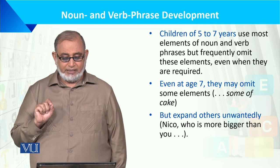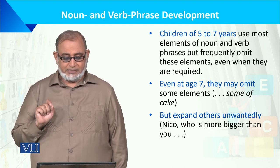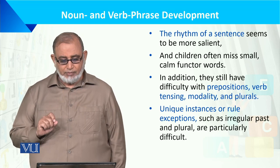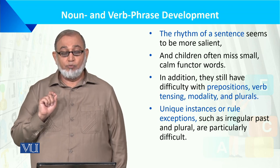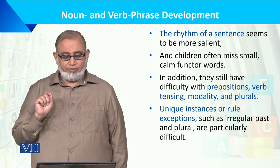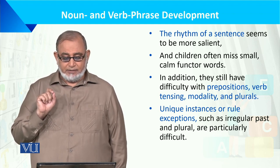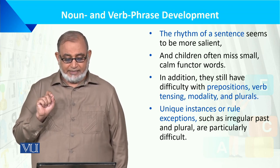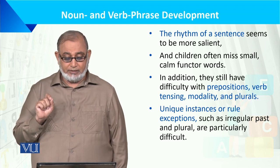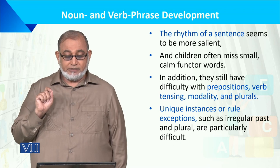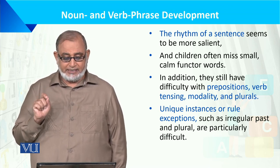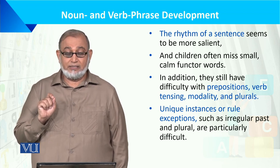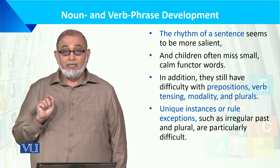Even at the age of 7, children may omit some elements but expand others incorrectly — for example, saying 'more bigger.' The rhymes of a sentence seem more salient and children often miss small function words. In addition, they still have difficulty with prepositions, verb tensing, modifying, and plurals. Unique sentence exceptions such as irregular past and plural forms are particularly difficult to use.